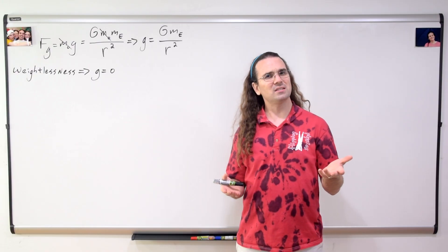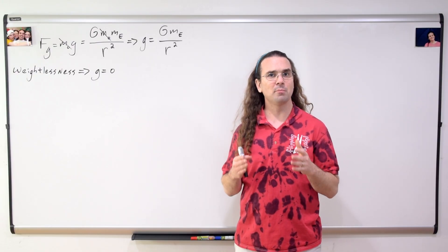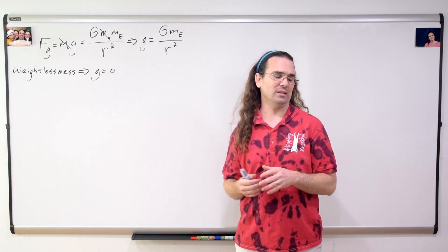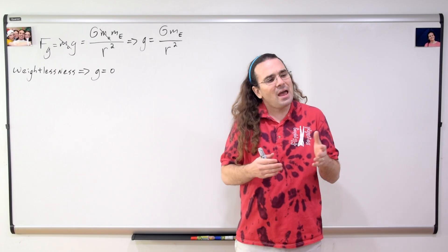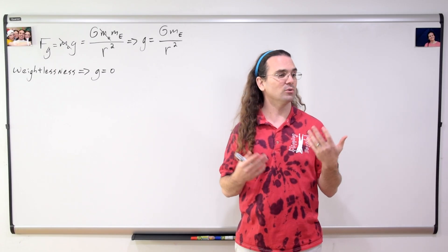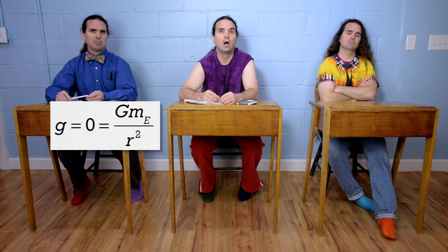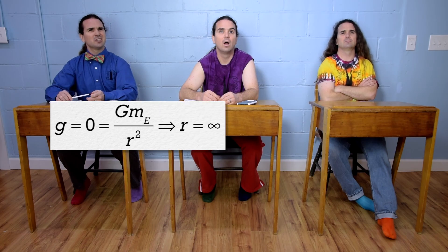Billy, what needs to happen for an object to be completely weightless? What needs to happen so that the force of gravity acting on the object equals zero? The distance between the center of mass of the object and all other objects would have to be infinitely large.